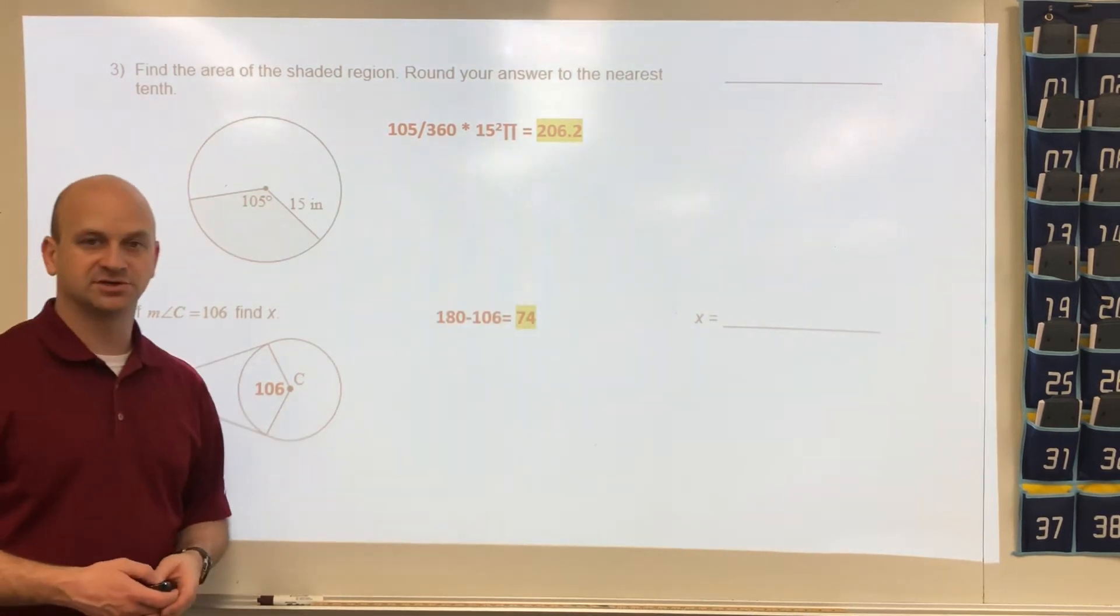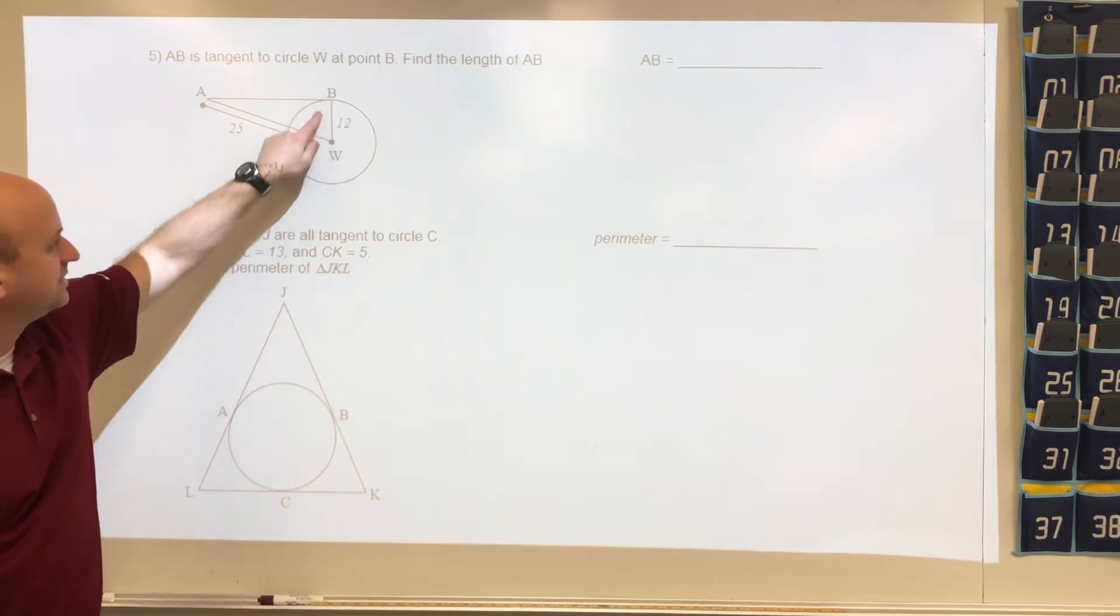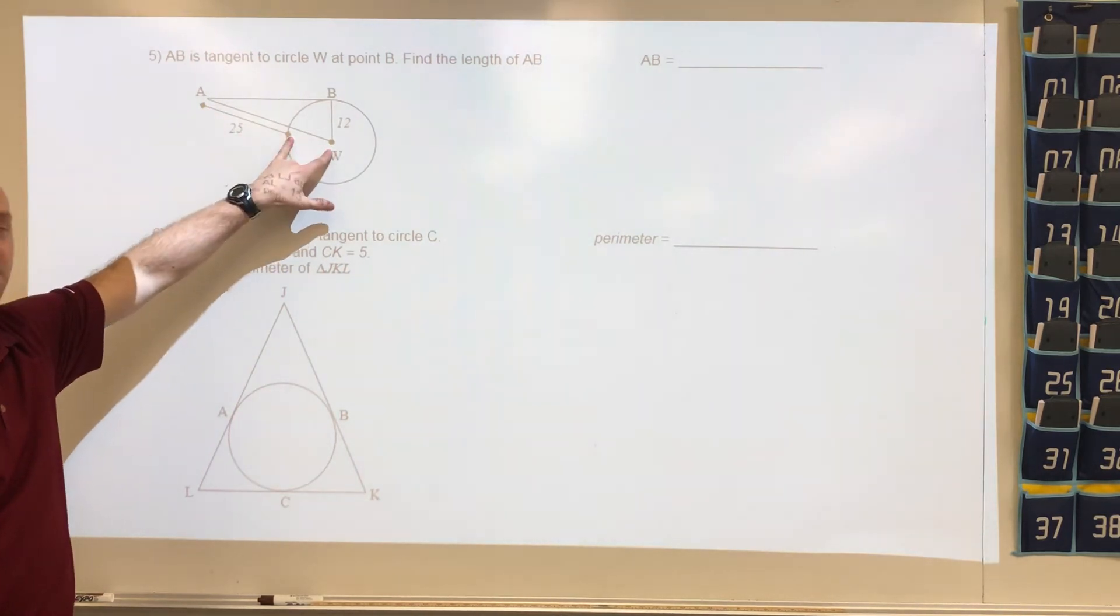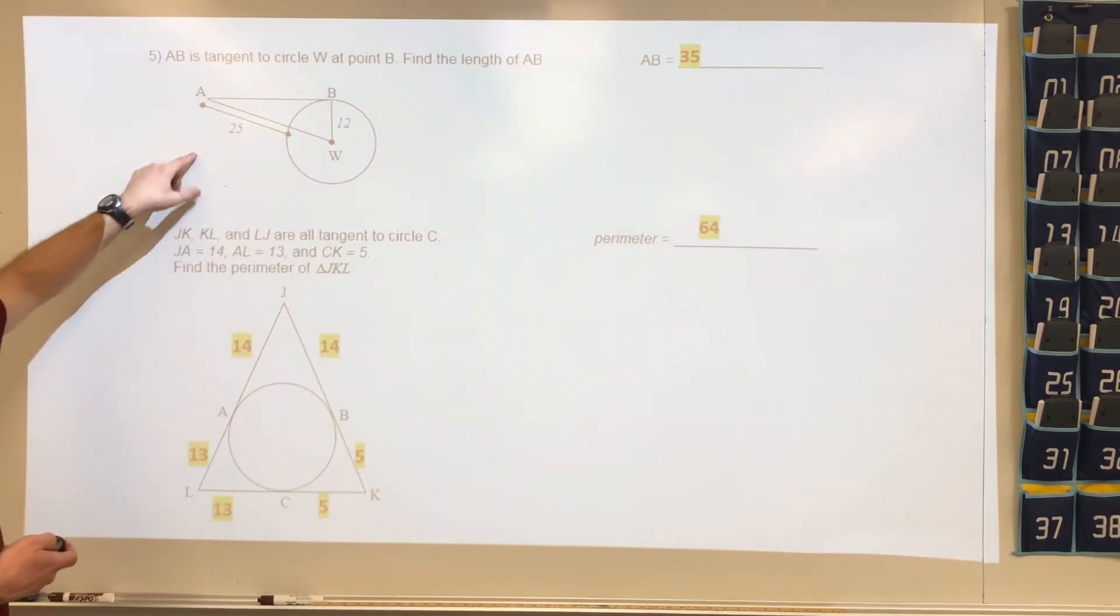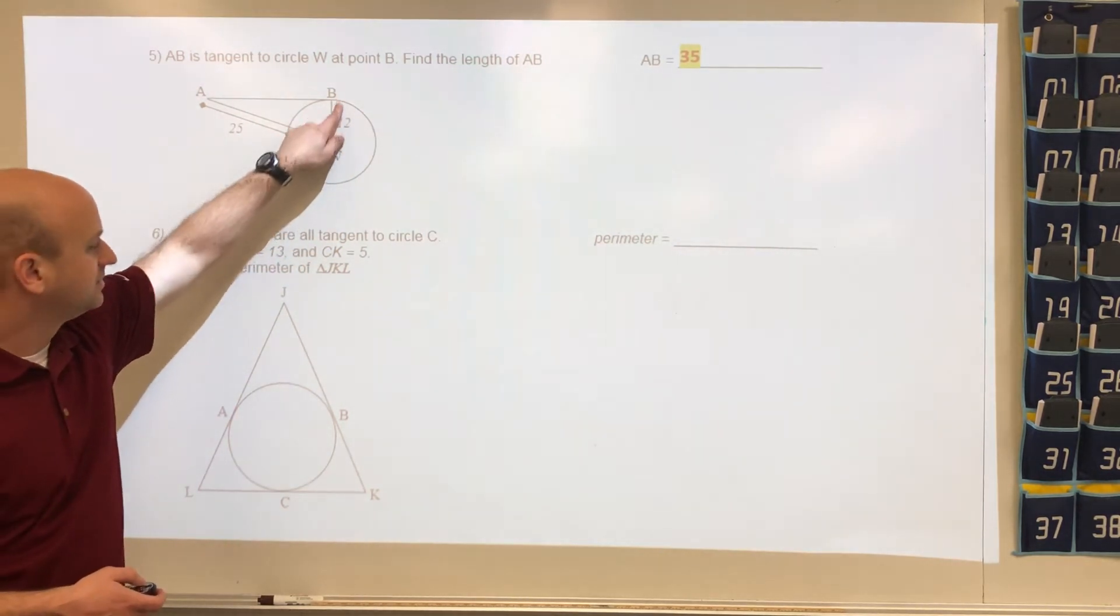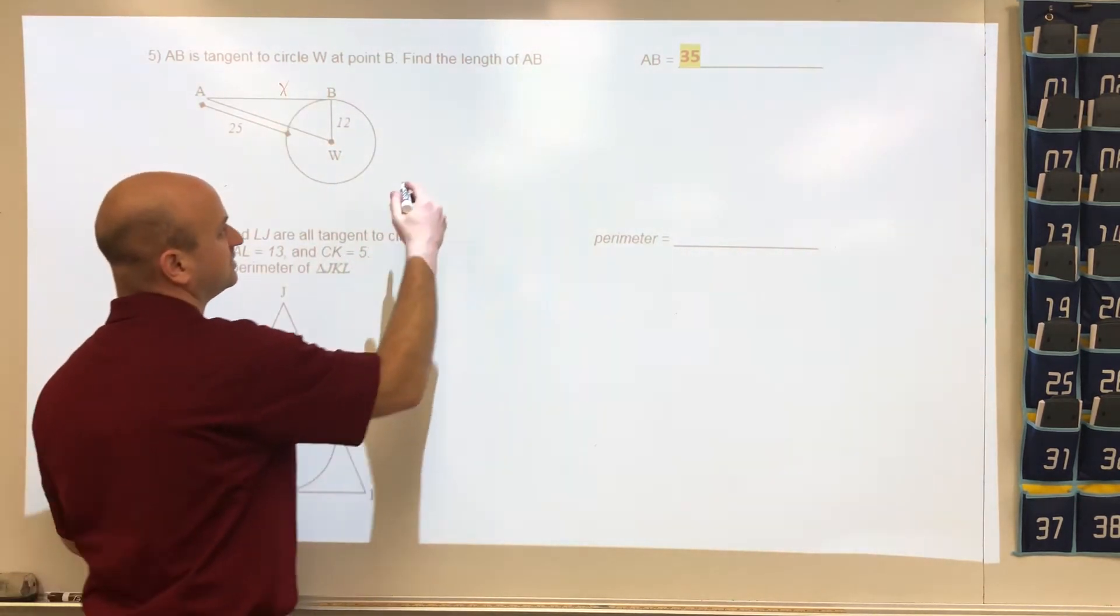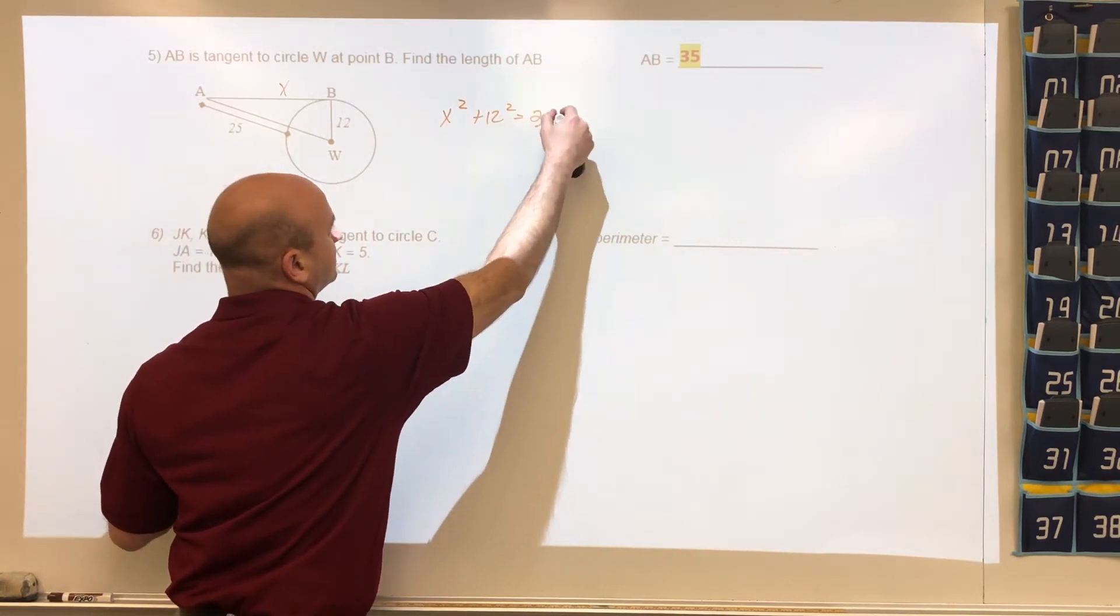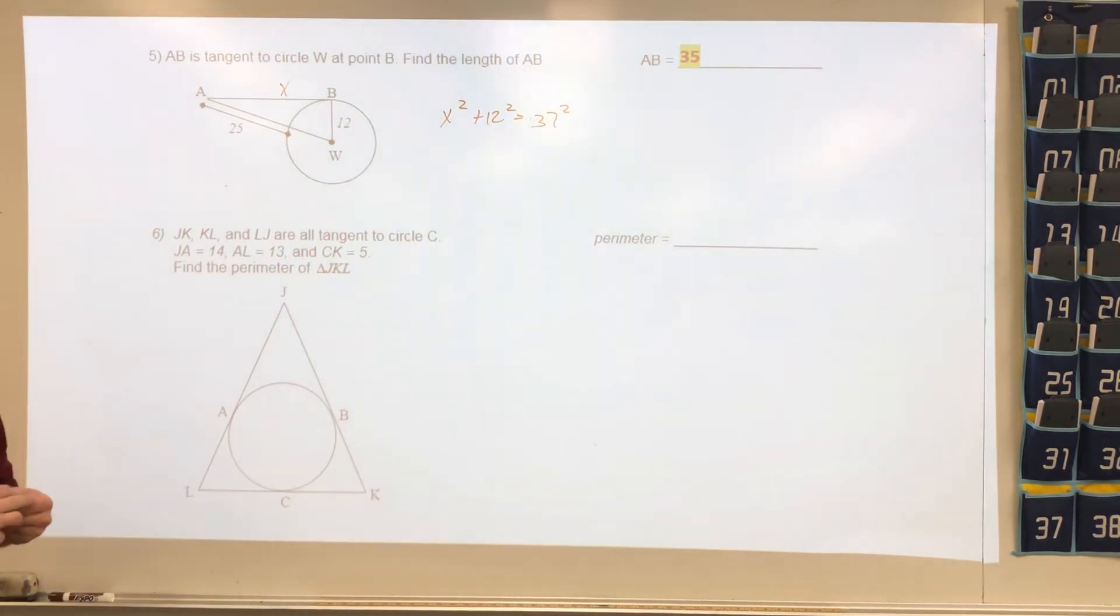Next question, we have a tangent here and a radius, so we know this is going to be our 90 degree angle. They give us this distance is 25. What they don't tell us is this and this is the radius, which they told us is 12. So this whole distance right here is going to be 37. What we end up having is x up here, that's what they want you to find. We have x² + 12² = 37². If we do the Pythagorean theorem work our way through, we would get a value of 35 for that distance.